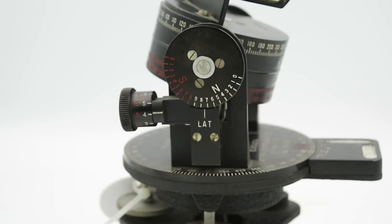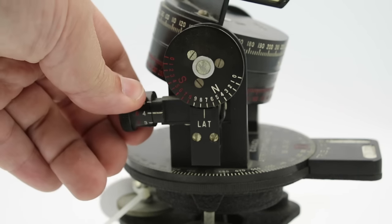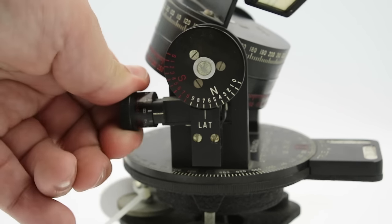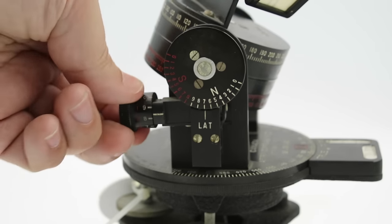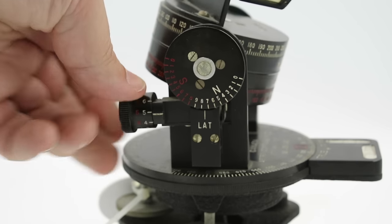Next we have our local hour angle drum which is mounted on a pair of uprights and whose angle can be adjusted by turning this micrometer knob. What this does is it adjusts the drum's angle according to your latitude and allows you to align the instrument with the celestial equator.